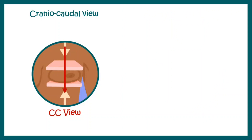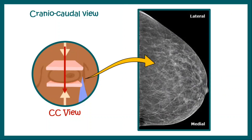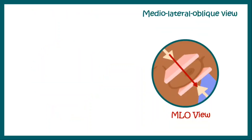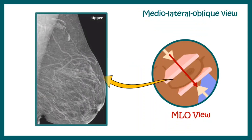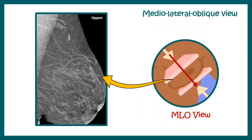In the cranio-caudal view, the image obtained looks like this. You can clearly make out the contour of the breast, the skin overlying the breast, the nipple areolar complex, and also the lactiferous ductular systems of the breast. In the medial lateral oblique view, in addition to the contour of the breast, the nipple areolar complex, and the lactiferous ductular system, you can see another structure which is the pectoralis muscles.